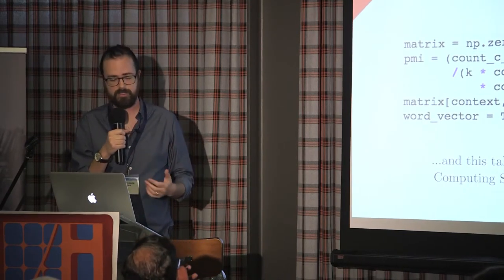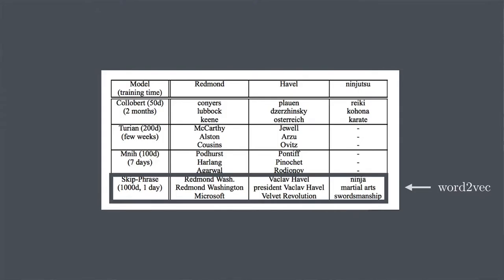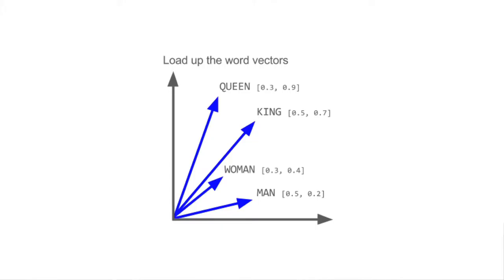I've given you two different ways of solving Word2Vec. Let me talk a little about the results. The top rows here show different Word2Vec-like algorithms that came before Word2Vec. The top row is a target query word like 'Redmond' — what words are really similar? One earlier model says Conyers and Lubbock are similar. But Word2Vec gives us Redmond Washington and Microsoft — which actually makes sense since Microsoft is in Redmond. For 'Ninjutsu,' Word2Vec gives ninja and martial arts. Word2Vec is really working.